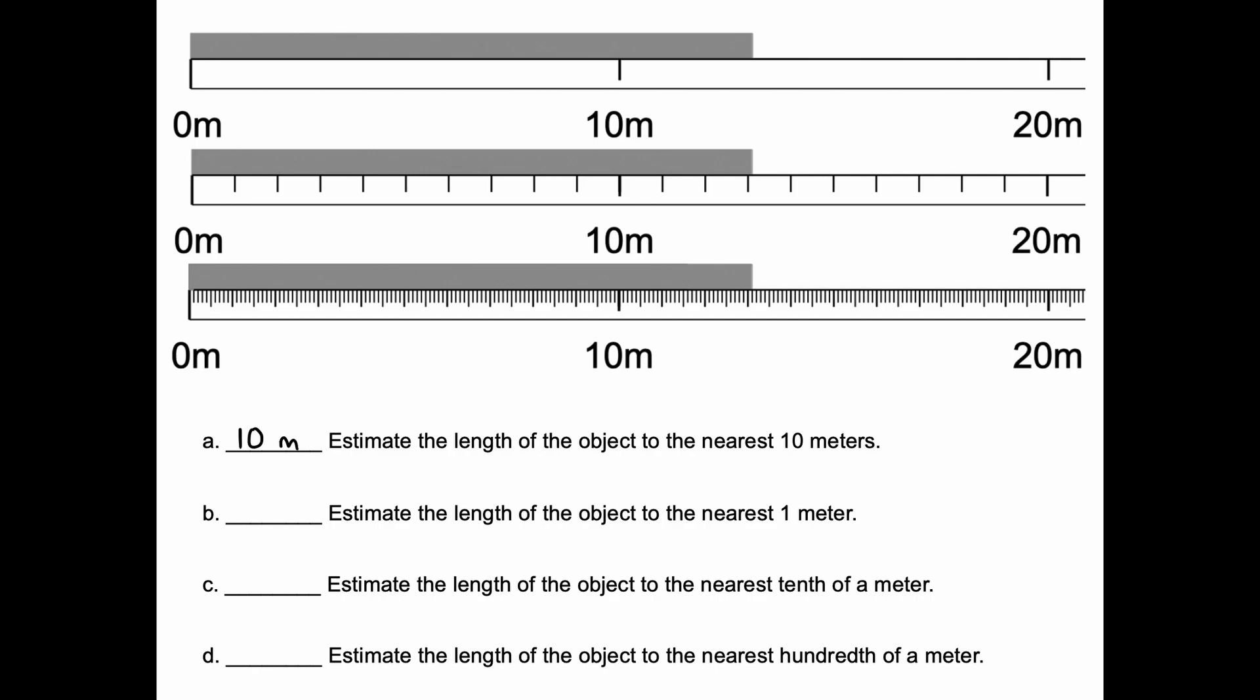But now we want to get more precise. We want to estimate the length of the gray stick to the nearest meter. For that, I may wish to use the better ruler. The middle ruler is marked to the ones place. So here we have 11, then 12, 13, 14, 15, and so on. And we have to decide, out of all those choices, which one is it closest to? I believe it's closer to 13 than anything else.